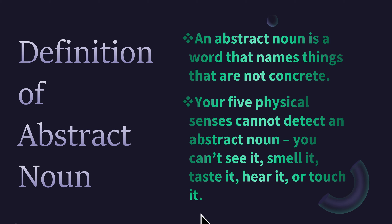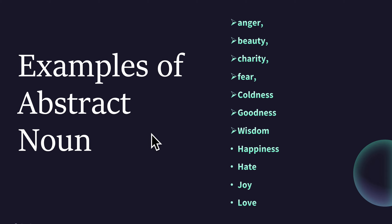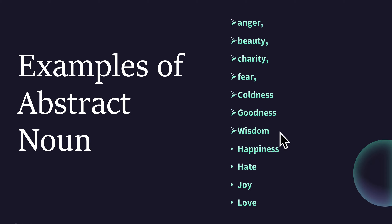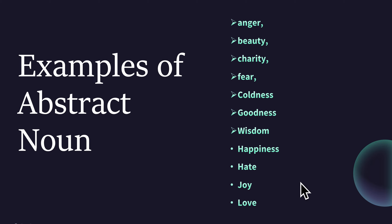It's a very comprehensive definition of abstract noun. Examples of abstract noun: anger, beauty, charity, fear, coldness, goodness, wisdom, happiness, hate, joy, love. These are the examples of abstract noun. We cannot count them, we cannot touch them — we can mostly feel them.